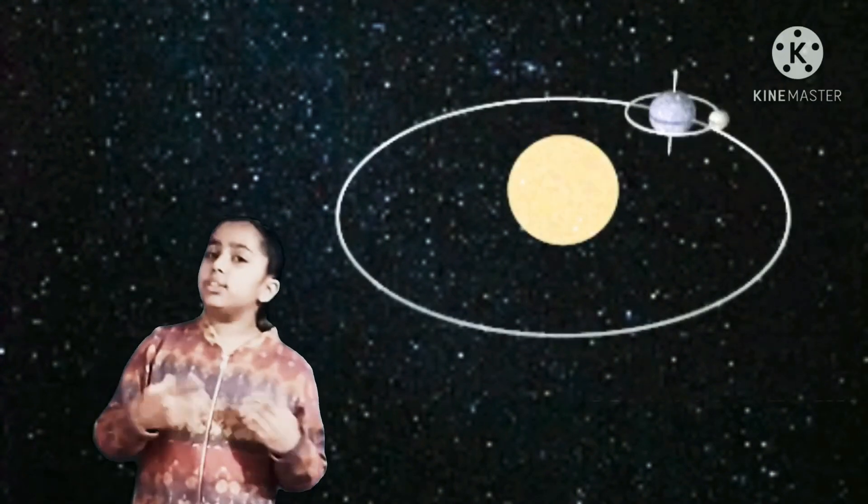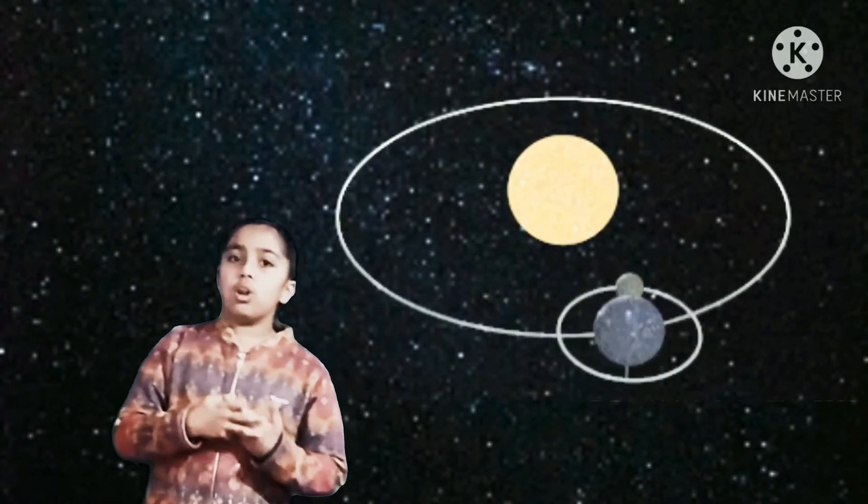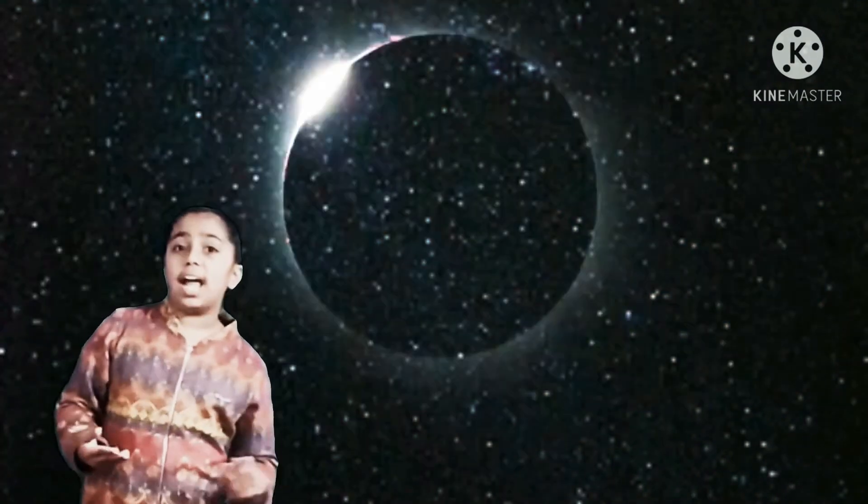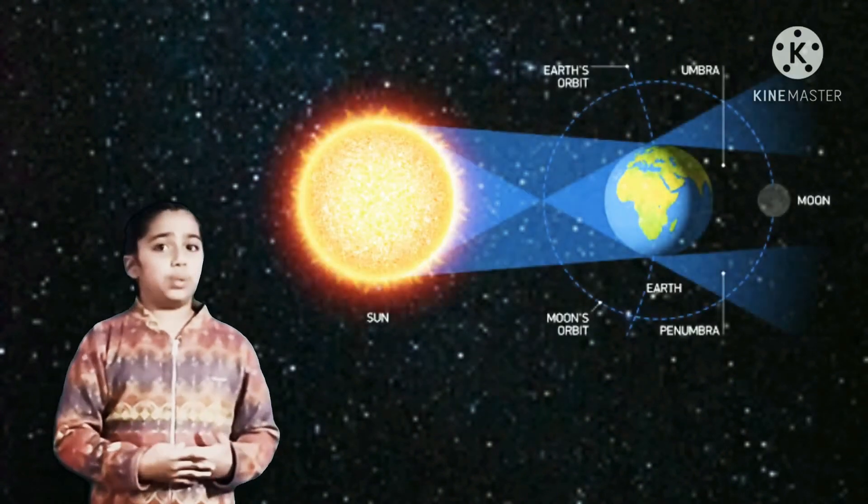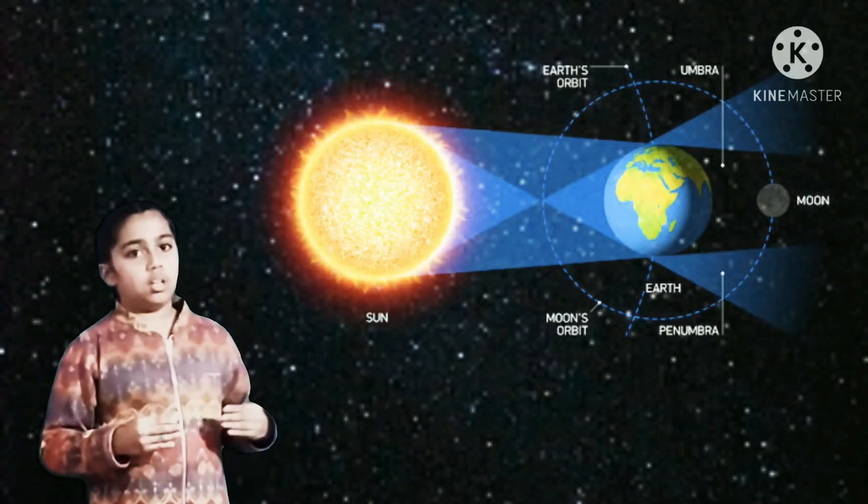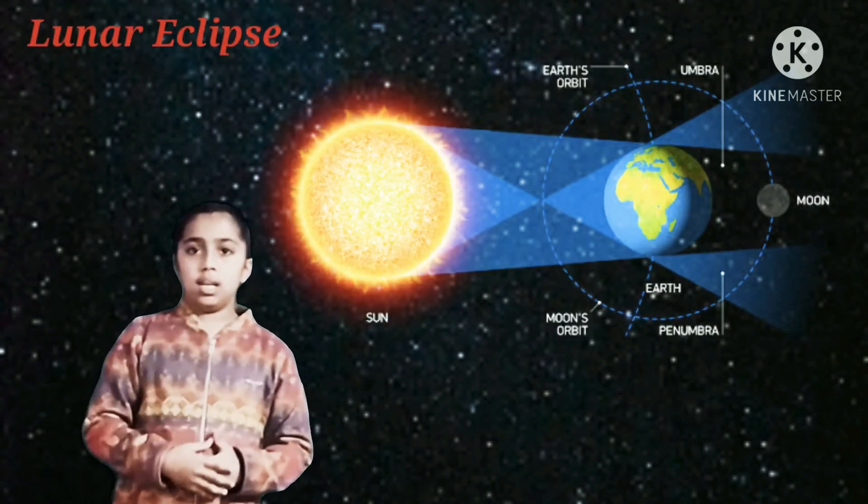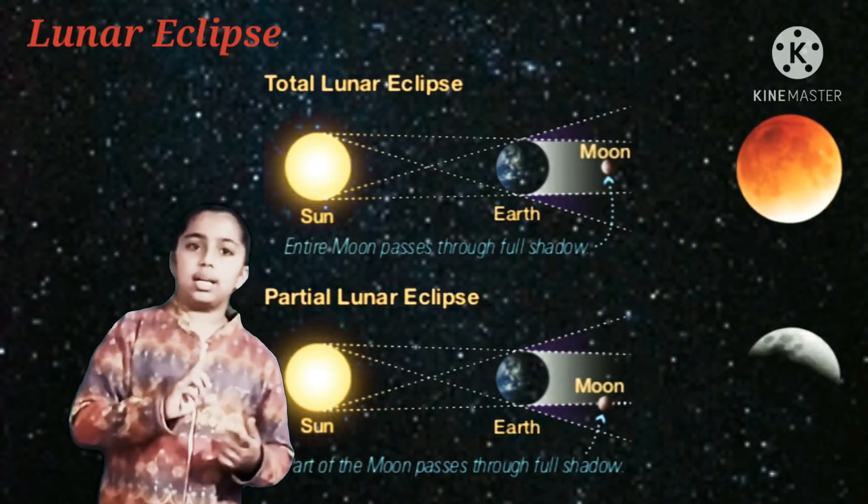The moon revolves around the earth and the earth revolves around the sun. Due to this, the certain position of the earth and the moon cause their shadows on each other. This blocks the sun's light and causes eclipse to occur. When the earth comes between the sun and the moon, the shadow of the earth falls on the moon. This is called lunar eclipse. This is of two types: total lunar eclipse and partial lunar eclipse.